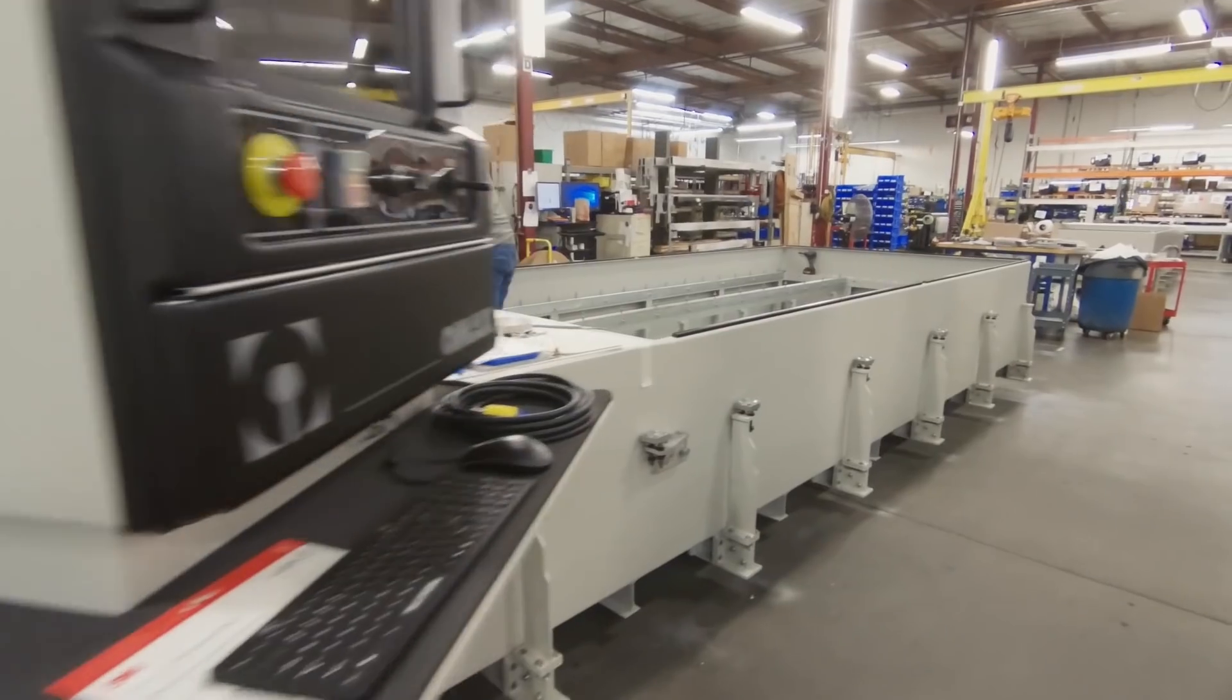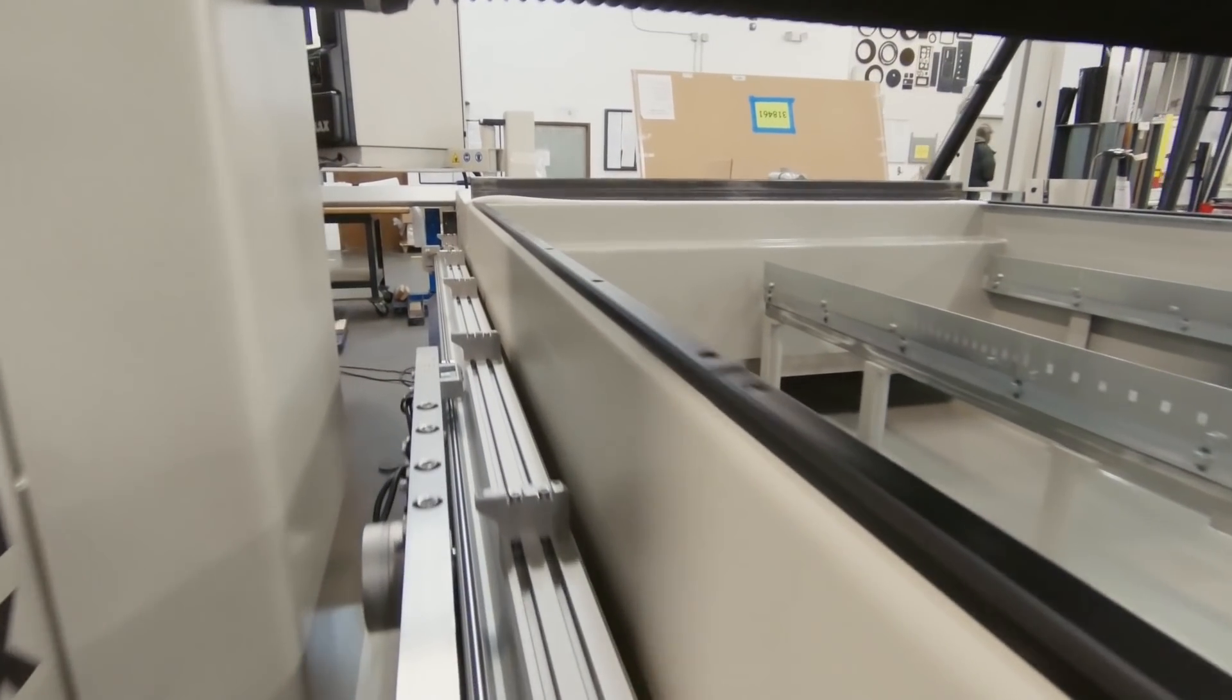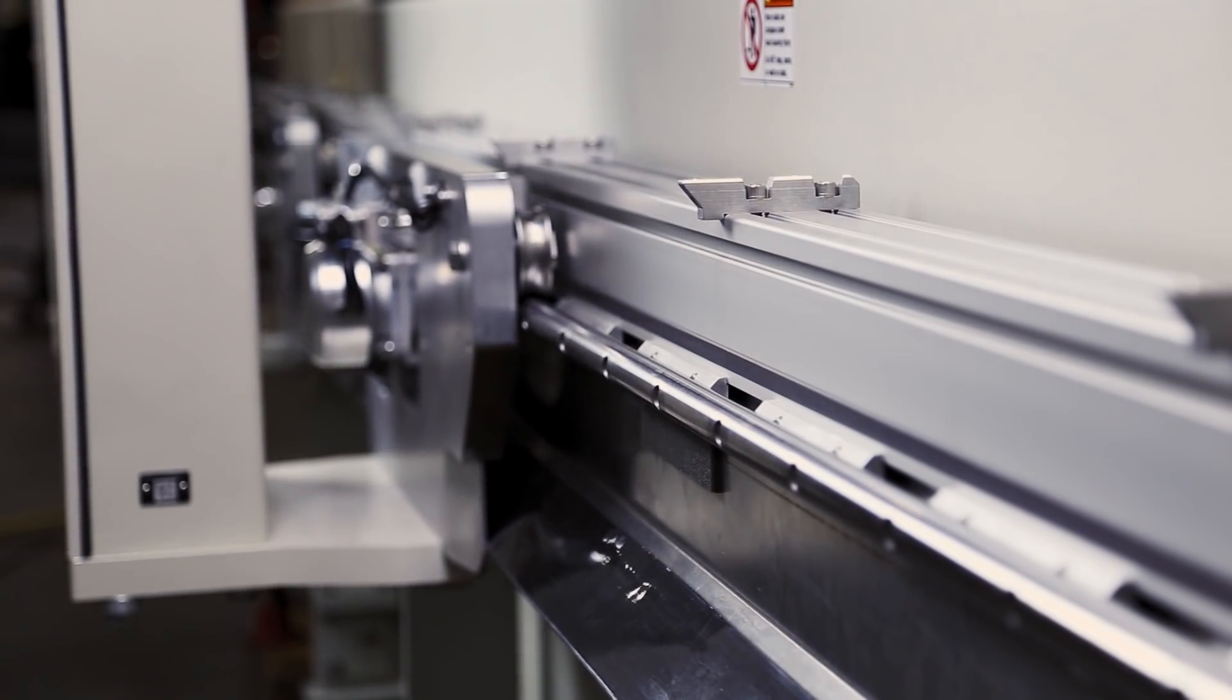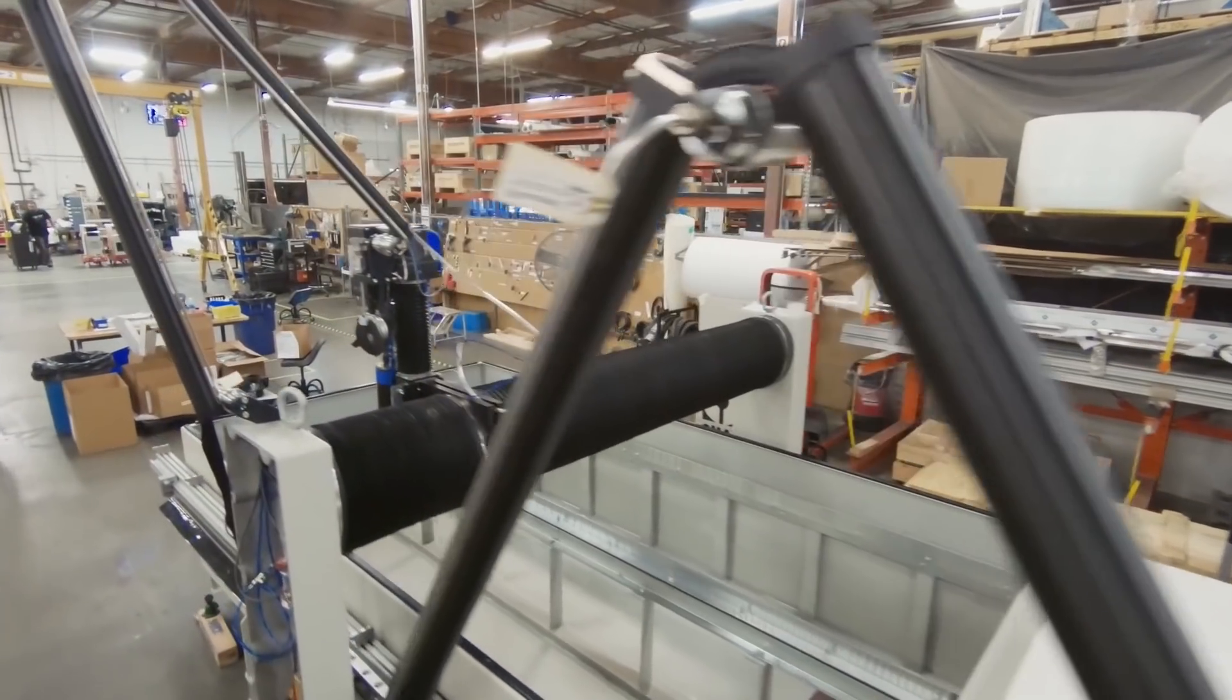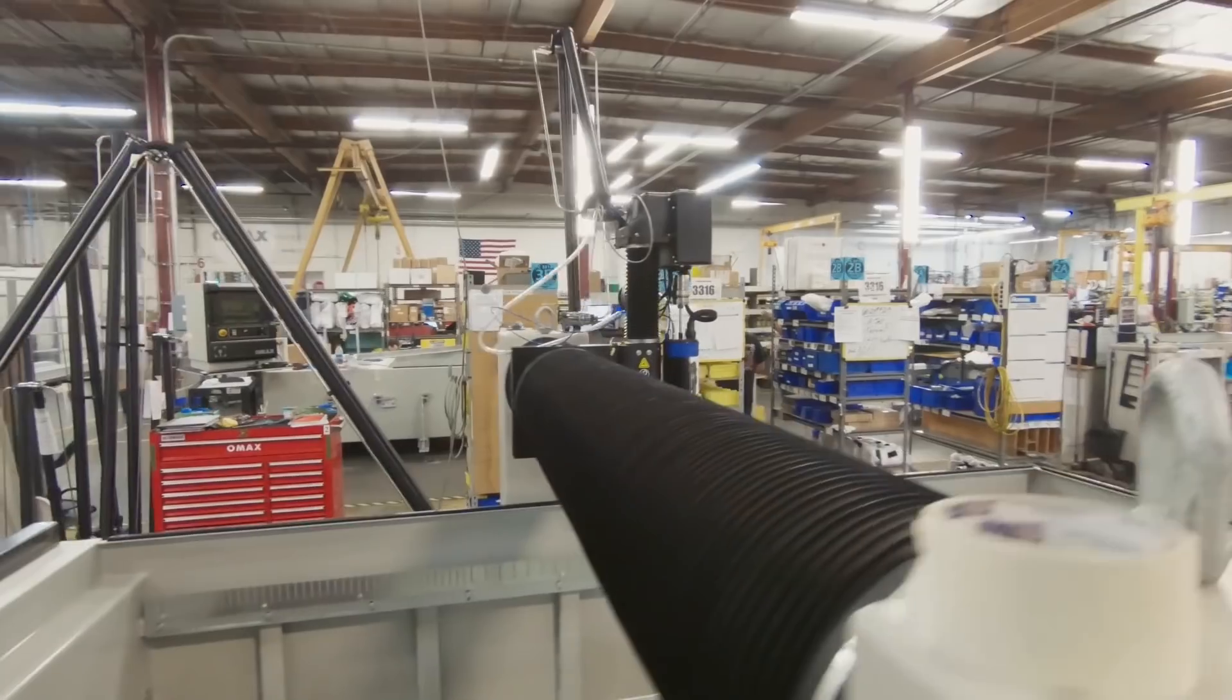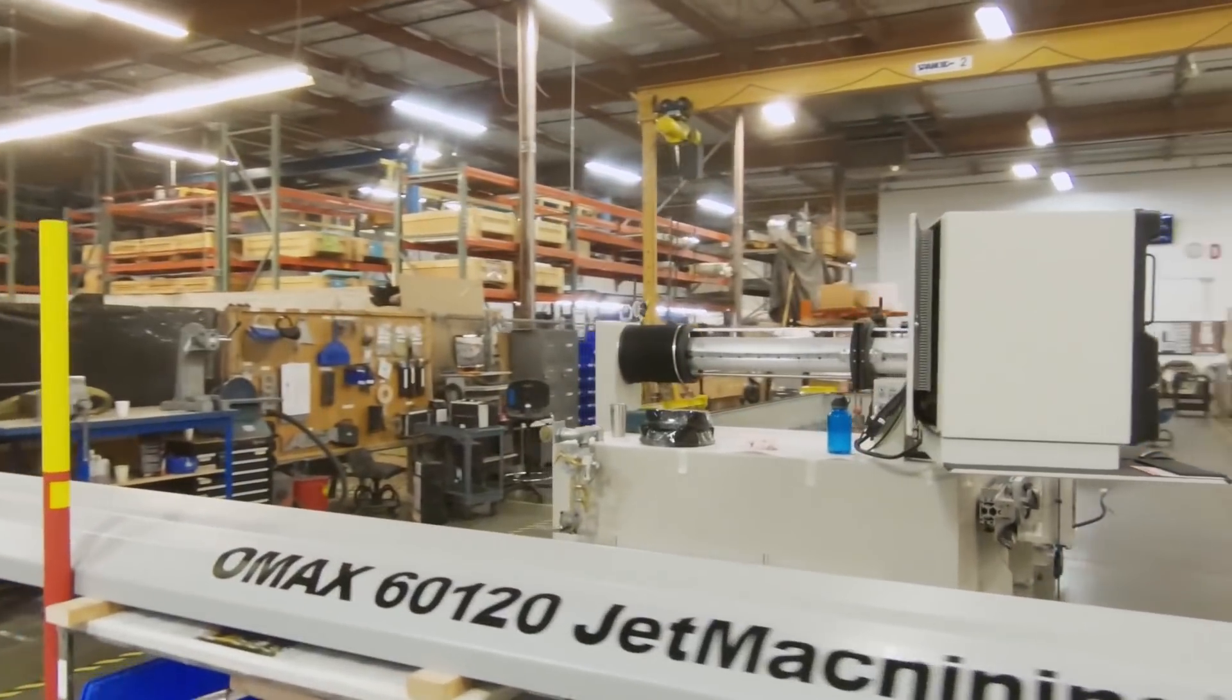OMAX bridge systems are the larger of our precision water jet machines. These robust reliable systems require little maintenance and maximize both machine time and profit margins. Standard scissor style plumbing contributes to a smaller footprint, lower maintenance and higher reliability.